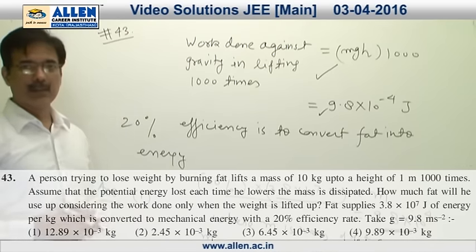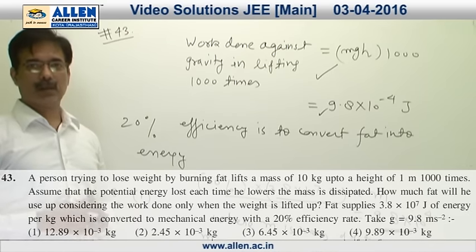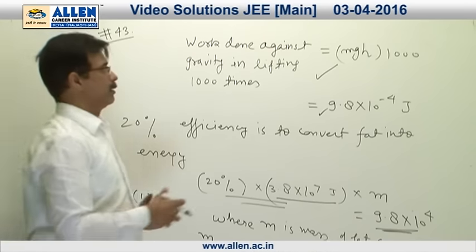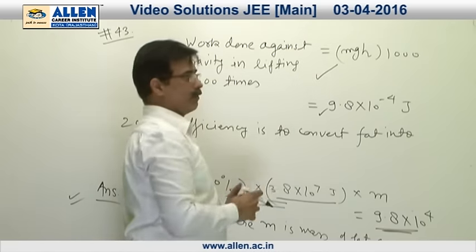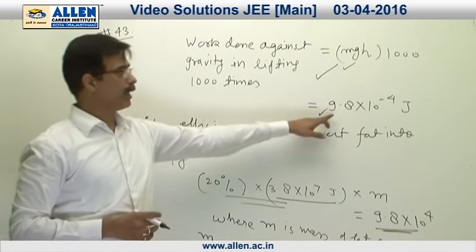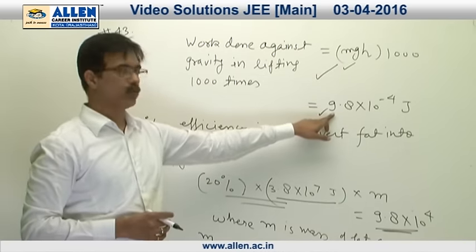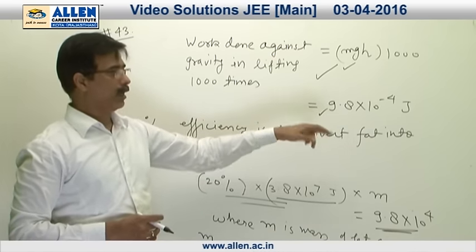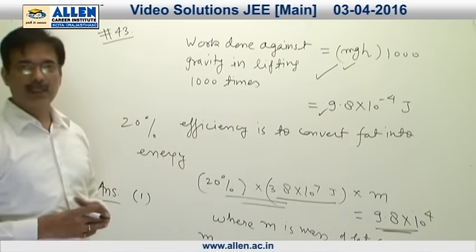Question number 43, this question is based on conversion of energy. In fact, energy required in 1000 lifts is MGH into 1000, and that comes out to be 9.8 into 10 to the minus 4 joules. This energy comes from conversion of fat, and that rate is being given in the problem.